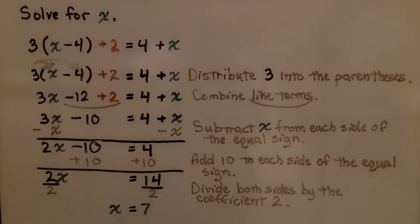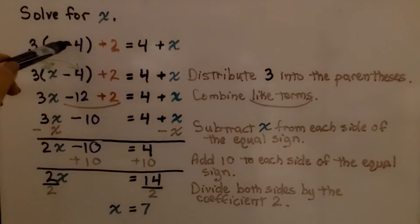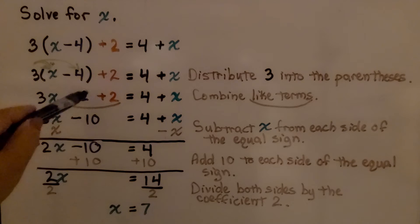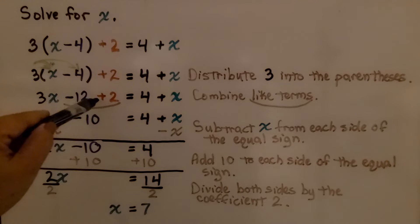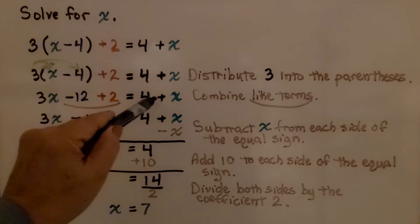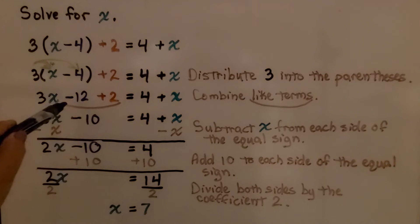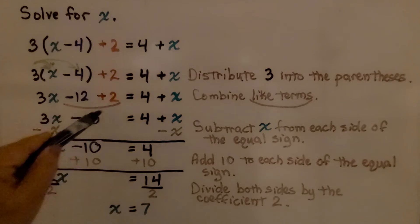Here it's telling us to solve for x again. We're going to distribute this 3 to the x and to the minus 4. That gives us 3x. 3 times negative 4 is negative 12. So we have 3x minus 12. We drop down this constant plus 2, and it's equal to 4 plus x. We combine the like terms. On the left side of the equation we have negative 12 plus 2, which brings us back up to negative 10.